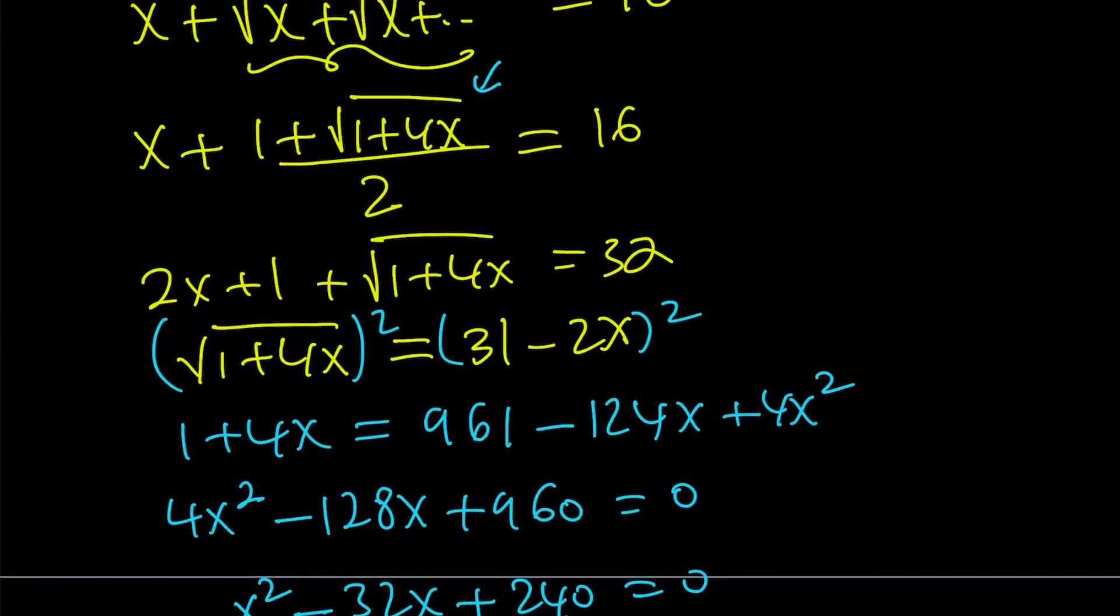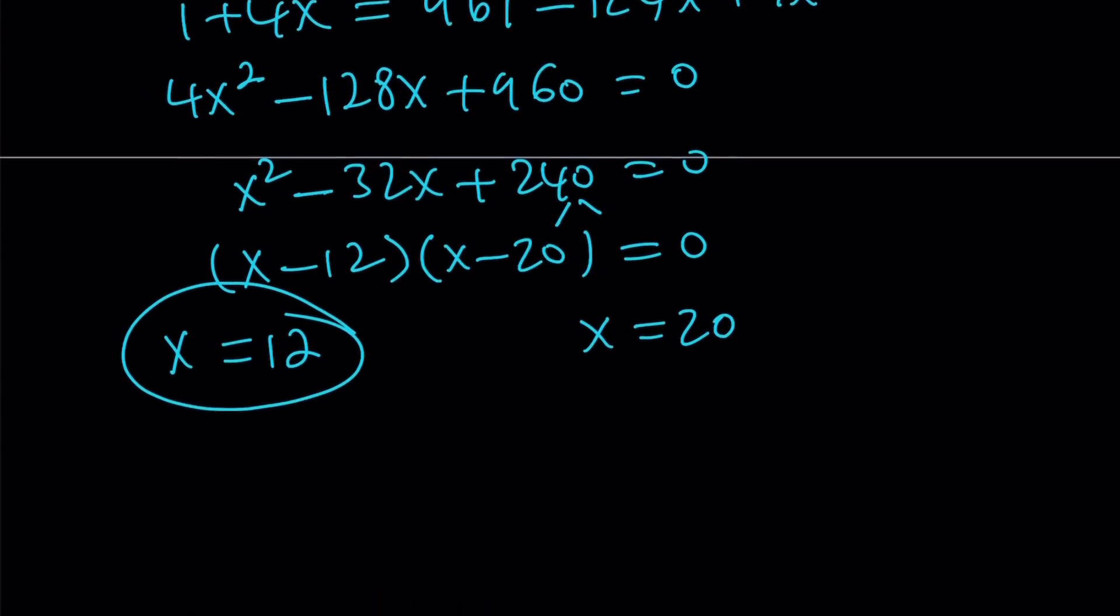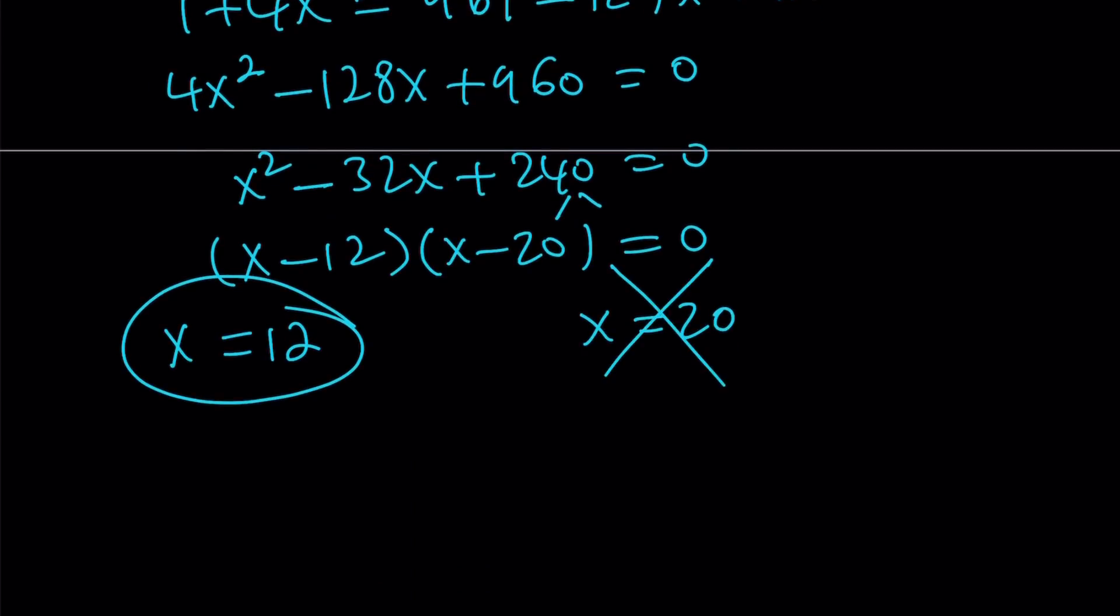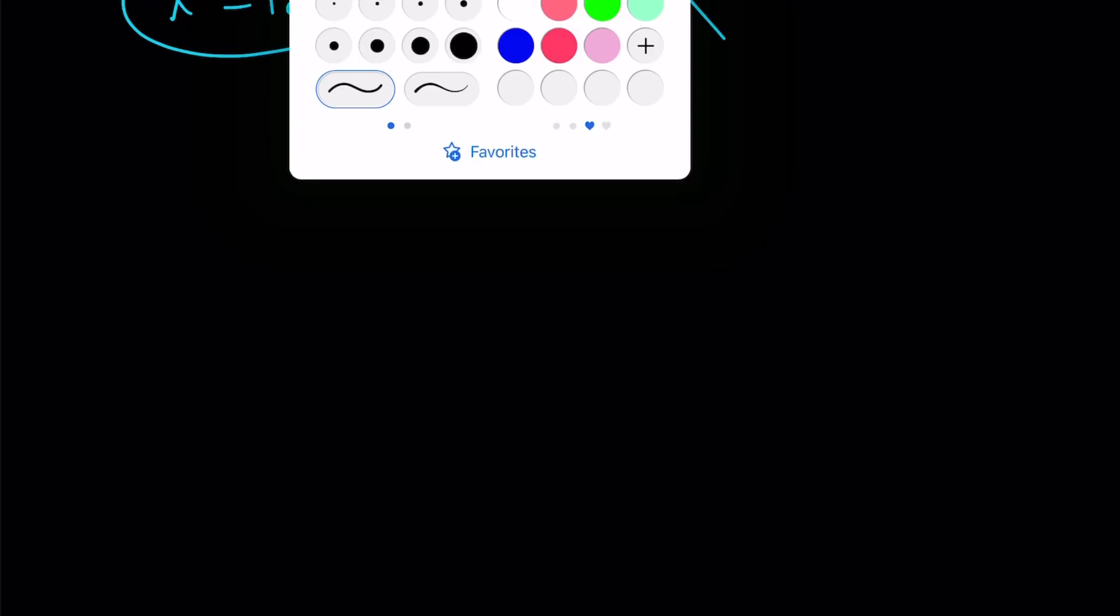Unfortunately, 20 doesn't because 20 times 4 is 80. You get 81, square root is 9, 1 plus 9 is 10, 10 divided by 2 is 5, 5 plus 20 is 25. Unfortunately, x equals 20 does not satisfy the radical equation. Therefore, we have to reject that solution. Let's talk about the second method now.